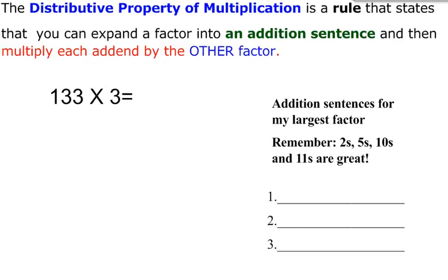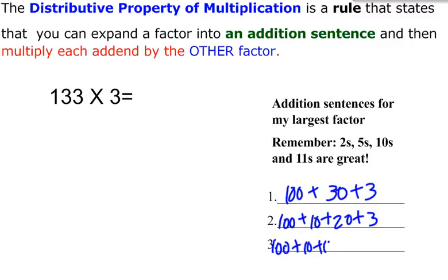If I had 133 times 3, I can expand that to 100 plus 30 plus 3. I can break it up into 100 plus 10 plus 20 plus 3, or 100 plus 10 plus 10 plus 10 plus 3. I can start with this first one right here. If I have 100, I'm going to multiply first. 100 times 3. Then I need to multiply the 30 times 3.